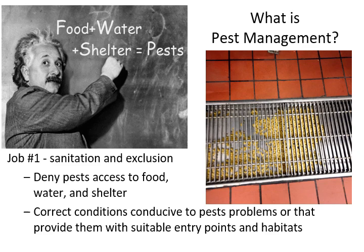So with that we'll get started with pest management in general. What is pest management? One thing you need to keep in mind is that all pests need the same things that we do: food, water, and shelter. So any way we can minimize or eliminate access to food, water, and shelter for pests is a form of pest management. That includes things like sanitation and what we refer to as exclusion.